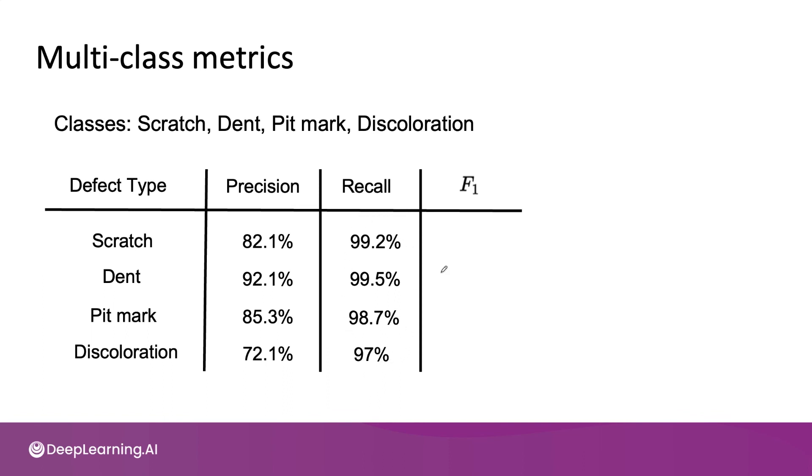And by combining precision and recall using F1 as follows, this gives you a single number evaluation metric for how well your algorithm is doing on the four different types of defects, and can also help you benchmark to human level performance, and also prioritize what to work on next. So instead of accuracy on scratches, dents, pit marks, and discolorations, using F1 score can help you to prioritize the most fruitful type of defect to try to work on.